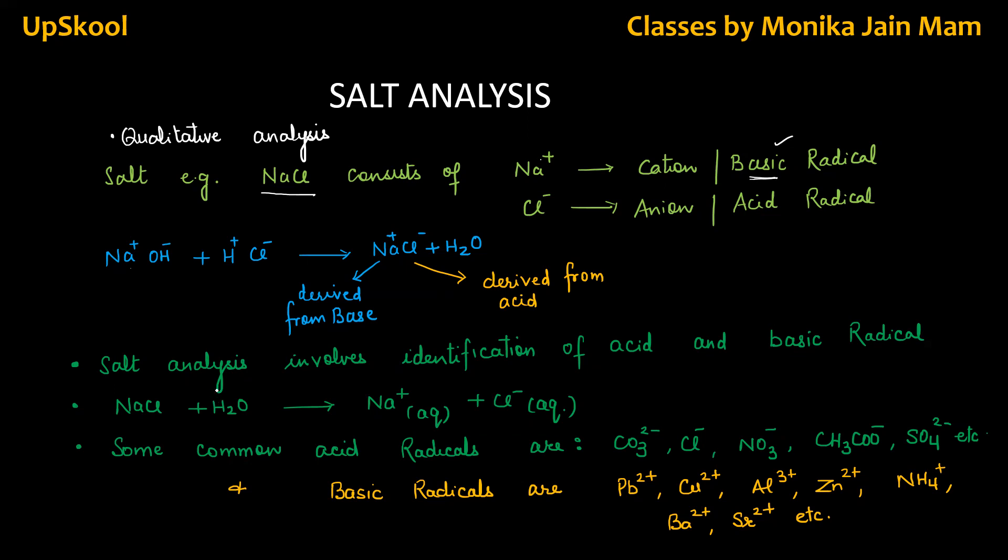This is our plus 2, plus 1, the two classes of practical salt analysis. What does it involve? Identification of acid and basic radical. And after that, we have to confirm it. Whenever salt is dissolved in water, it dissociates into ions. This means that sodium ion and chloride ion are free to give their tests. So, we will identify and confirm both basic and acid radical separately.